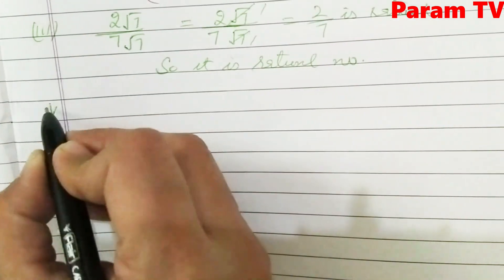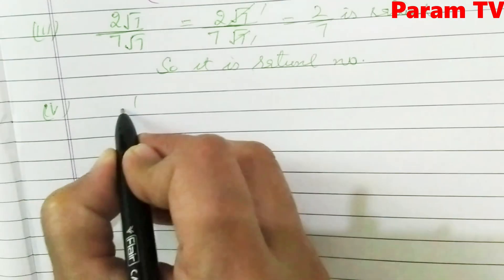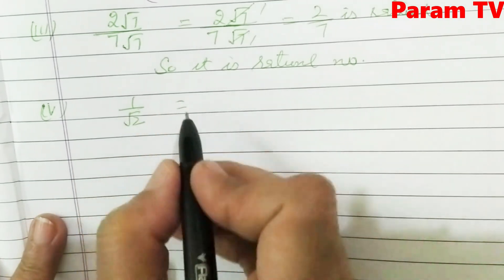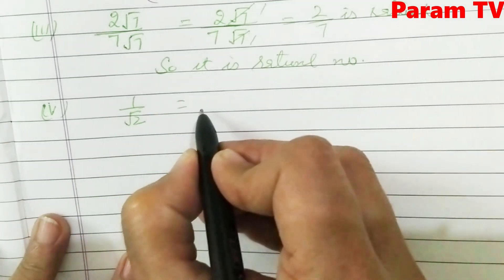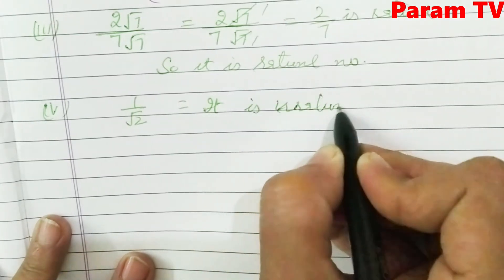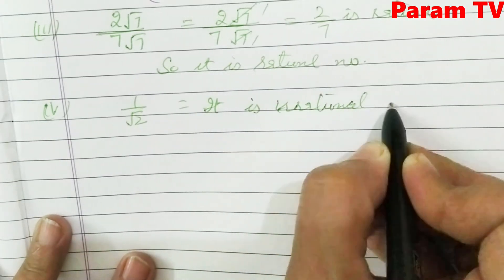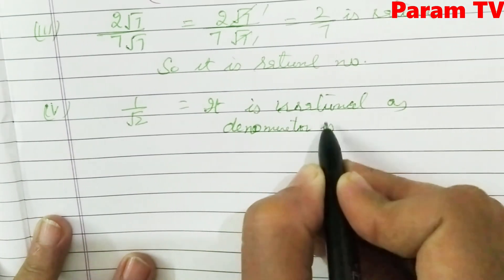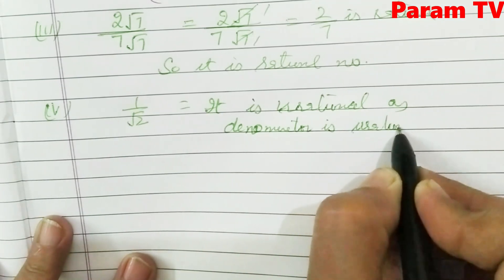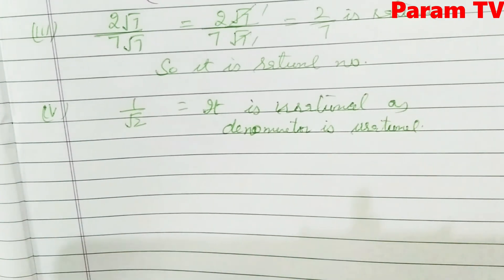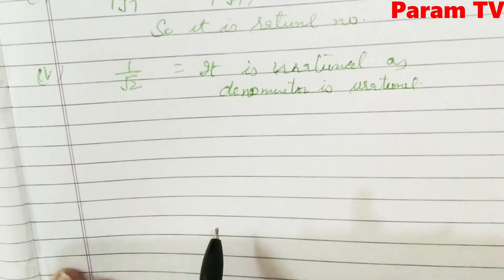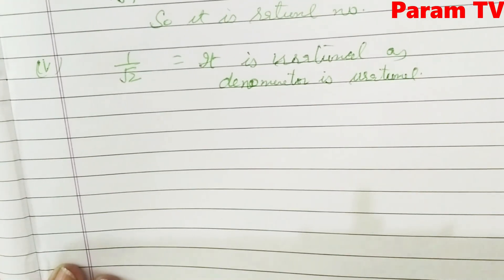Fourth part is 1 by root 2. This is irrational. The reason is that the denominator is irrational, so the entire number is irrational.